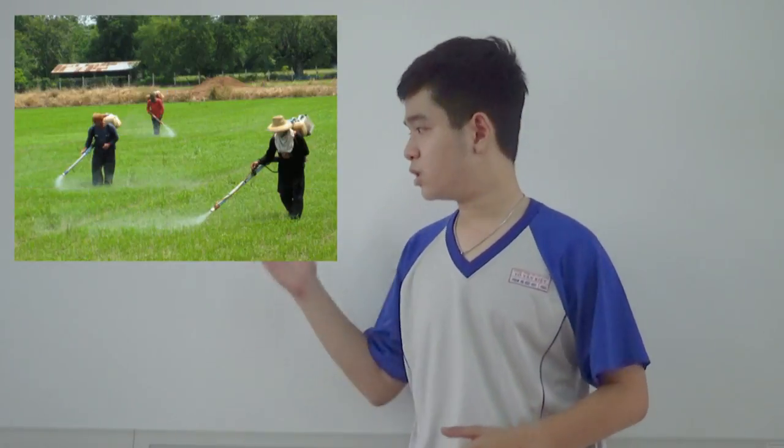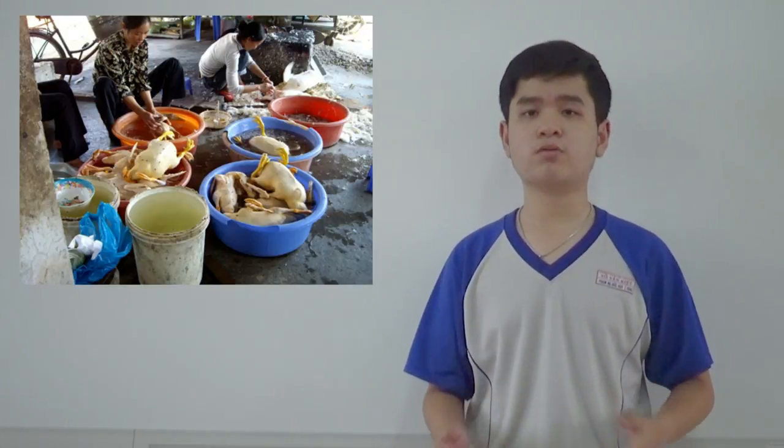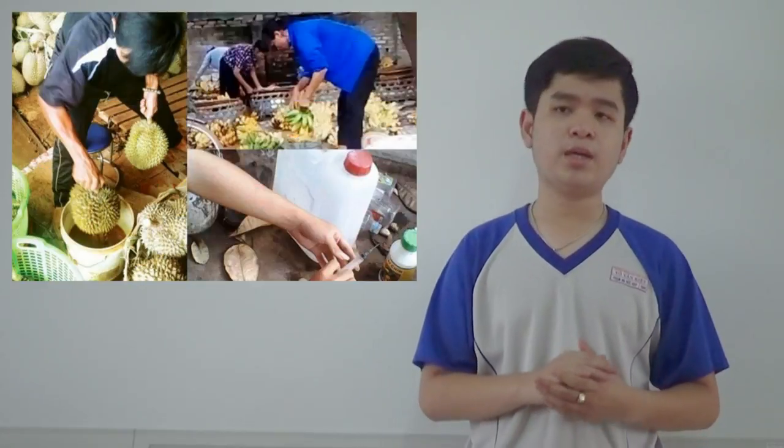In order to meet the requirements, some farmers begin to use not only pesticides to make the crops grow faster, but they also use growth stimulants to make the size of vegetables and food bigger than normal. Besides using chemicals on crops, some people soak raw flesh into chemicals to make it look like fresh meat.